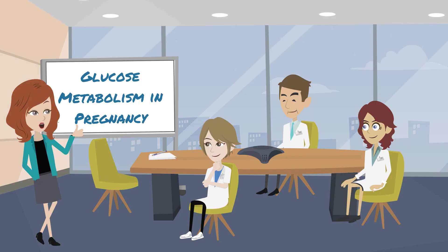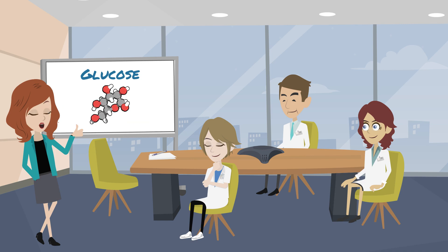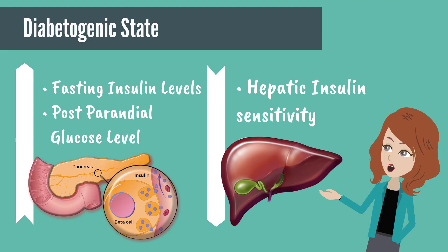Before we talk about the pathophysiology itself, let's review the normal physiological changes of pregnancy that alter glucose metabolism. The goal of glucose metabolism in pregnancy is to ensure an adequate source of glucose for the fetus and the mother. Pregnancy is a diabetogenic state with progressively increasing postprandial glucose levels and increasing fasting insulin levels. At the same time, there is a suppression of hepatic insulin sensitivity which contributes to higher glucose levels.